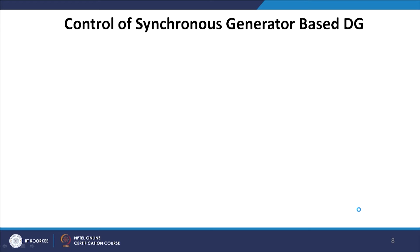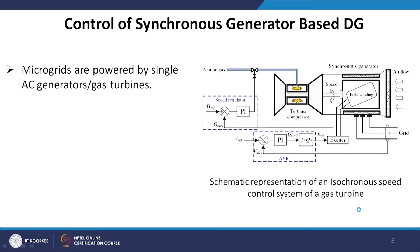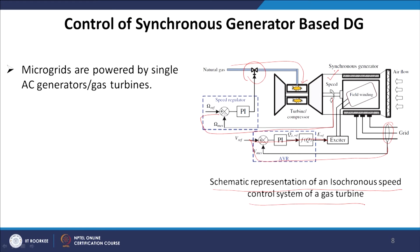Control of synchronous generator-based distributed generators is as straightforward as thermal power generators. A simple schematic of a speed control system for a gas turbine shows natural gas flowing to generate power for the grid. The grid inputs are fed to the exciter, and the speed signals can vary through a speed regulator so that natural gas injection can vary to meet the desired speed. You detect the speed, and based on your input energy source — whether steam or gas — you can adjust speed to achieve the desired frequency.